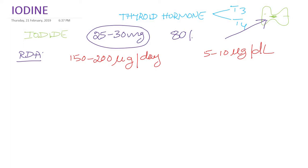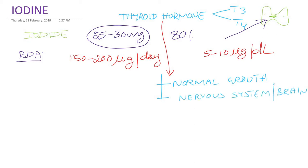Thyroid hormone is a very important hormone required for normal growth and development. It is also required for neurological development — the development of the brain — during early embryonic and fetal life. When the fetus is growing in the mother's womb, thyroid hormone plays a very important role in the growth and development of the nervous system. Iodine is also very important for metabolism of various macronutrients and micronutrients.